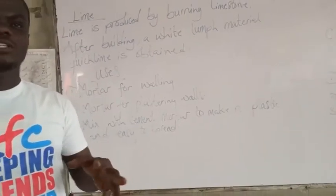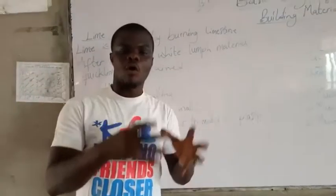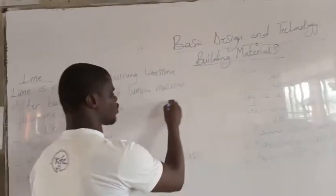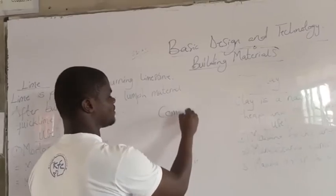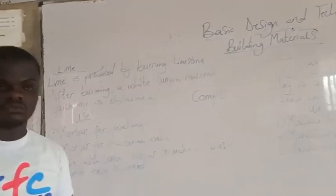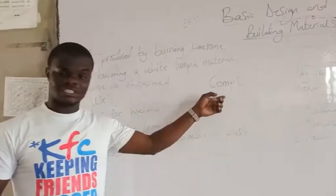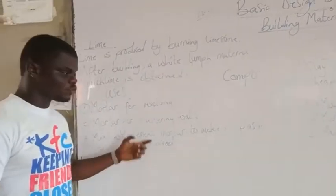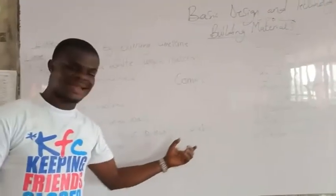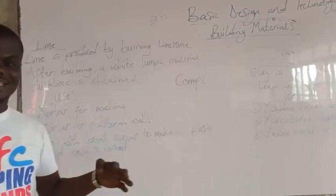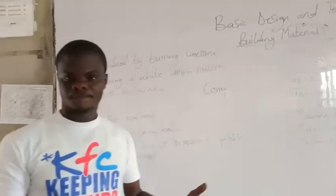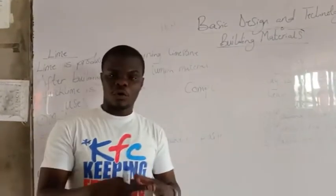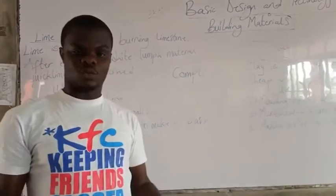Now there are some mortars that have two or more binding materials in them. Those types of mortars we call them kompo mortar. So when we are treating mortar we will deal with that one. When lime is mixed with cement to form a mortar it looks more plastic, and because of that it is able to spread well.